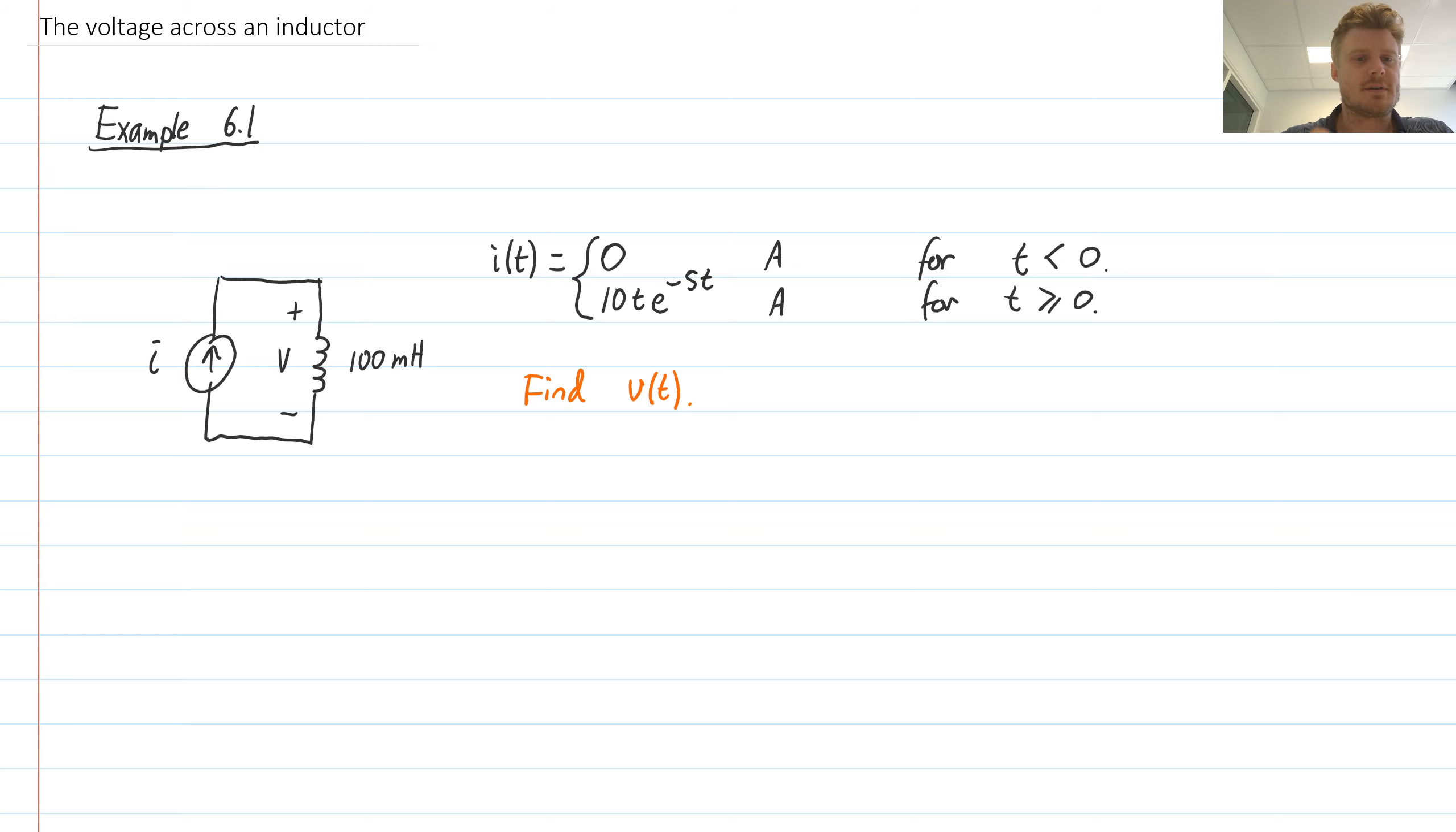This question gives us a very simple circuit which has a current source and an inductor. The current source is time dependent, so we have zero current for times less than zero, and then we have current defined by this expression here for times greater than or equal to zero. Our question is: find the voltage across the inductor.